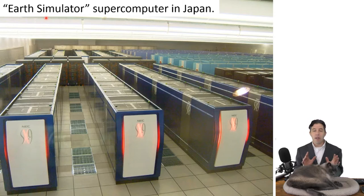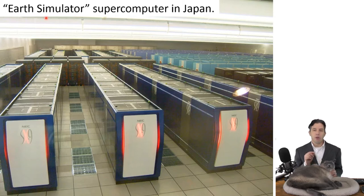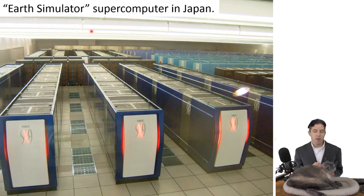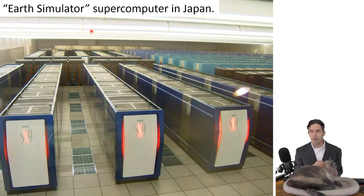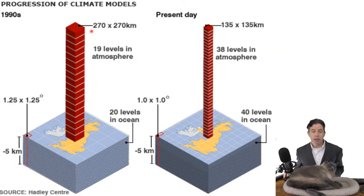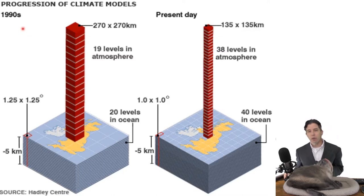You program in all of those equations for all those boxes in the atmosphere, ocean, and land. A computer like this might have a couple hundred thousand processors, and you assign a processor to each box — they're all solving these equations simultaneously. It takes a lot of computer power to do this. Early computer models actually started in the 70s when computers were pretty slow, and as the computers got faster our climate models got better.